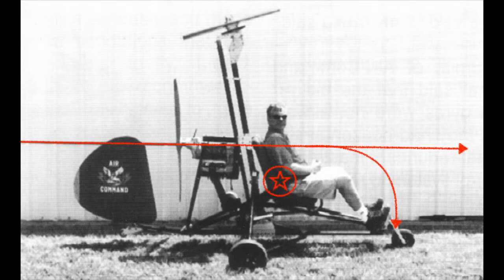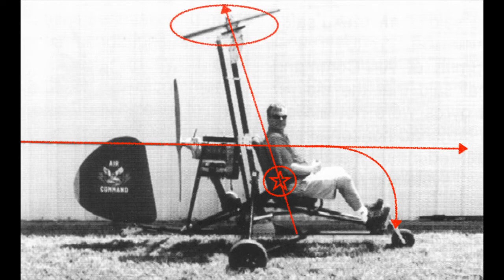Power pushover is when the thrust vector of the propeller is above the vertical center of gravity of the aircraft. As you can see here, the thrust offset creates a torque moment around the center of gravity, and causes the aircraft to want to pitch forward around the vertical CoG. What keeps things in check in normal flight is the rotor thrust from the blades at the top of the mast.